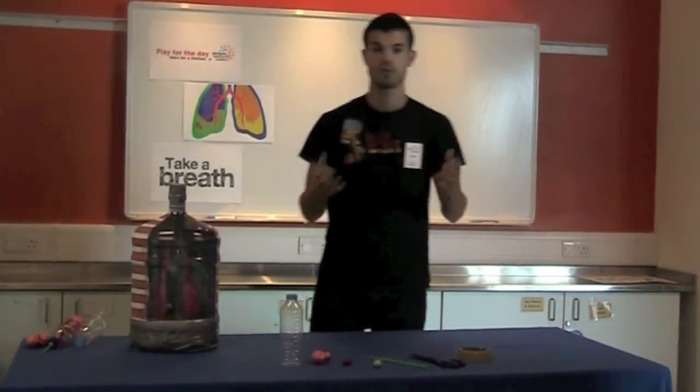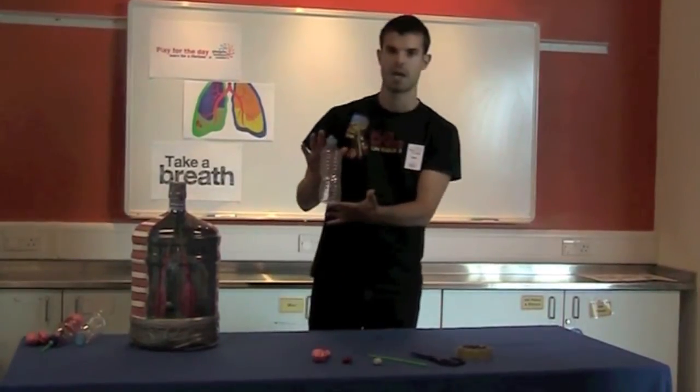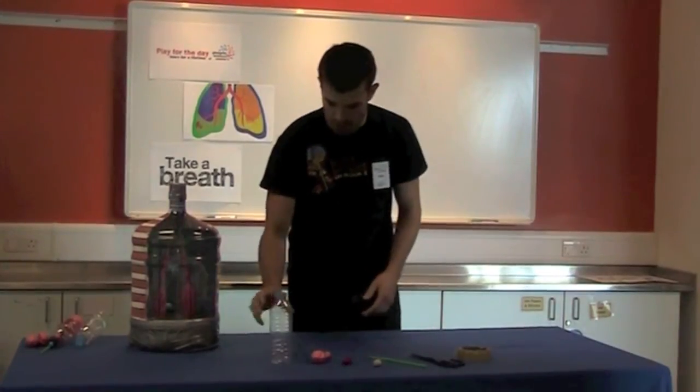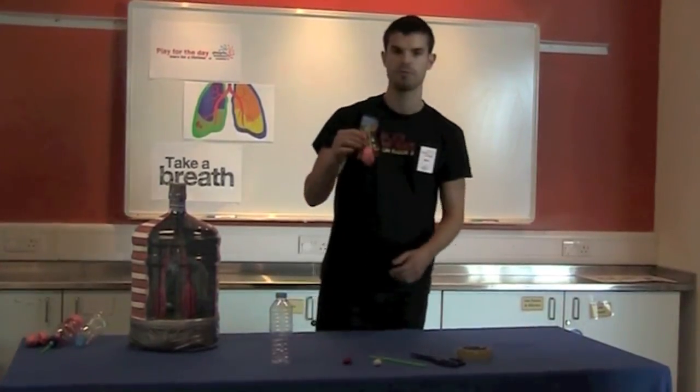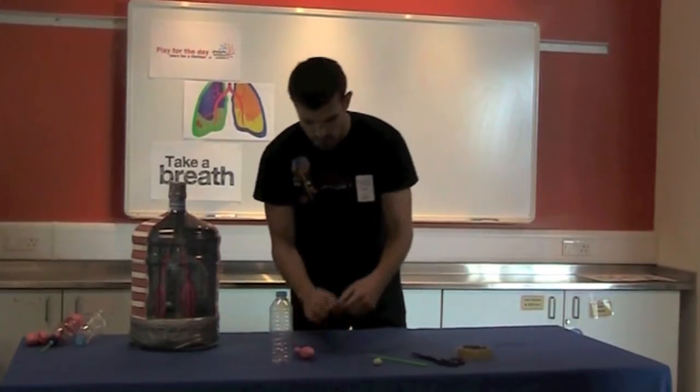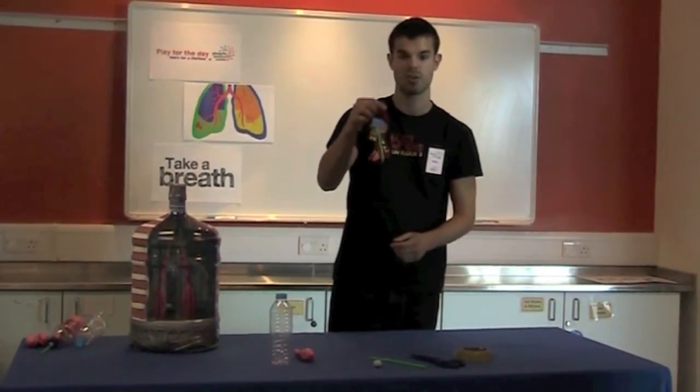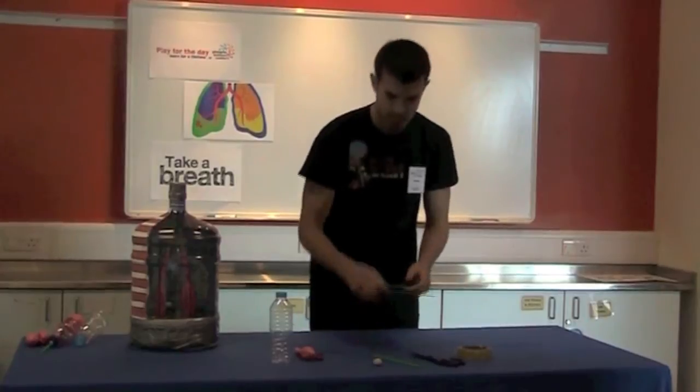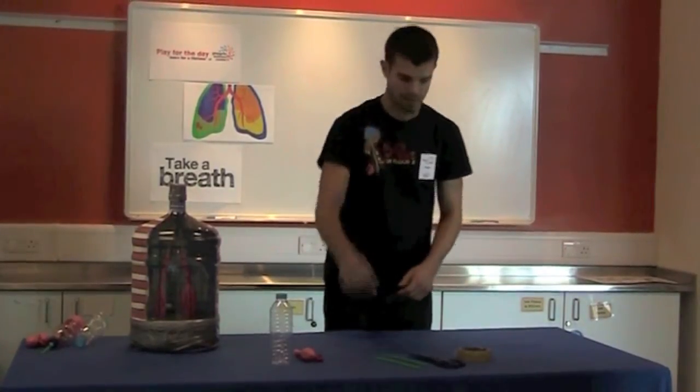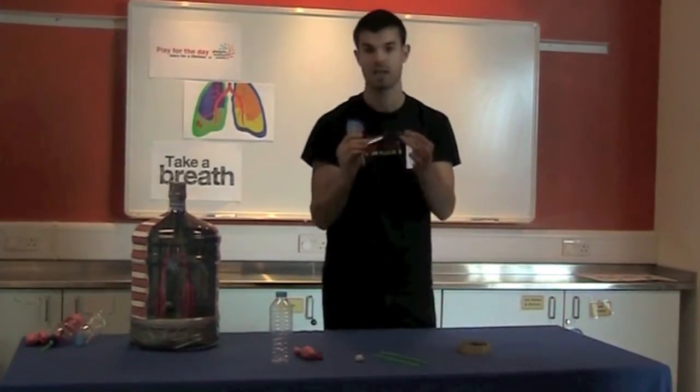So in order to make your very own set on a slightly smaller scale, what you're going to need is a 500ml bottle, which has been cleaned and dried. You're also going to need a large balloon. The color doesn't really matter, but this is going to be our diaphragm. You're going to need a smaller red balloon. Again, the color doesn't really matter, but this is going to be our lung. You're going to need a straw, some blue tack, some tape, and some scissors.